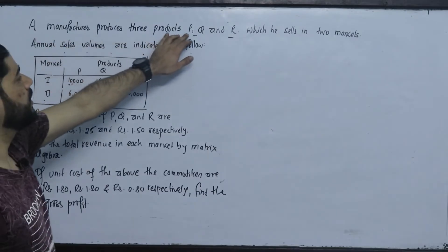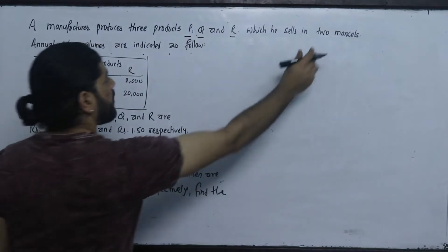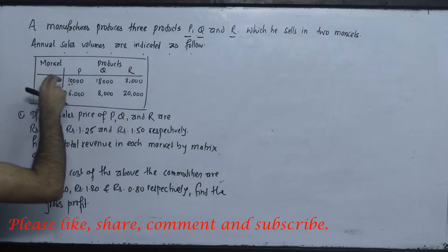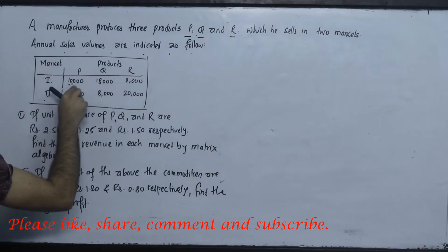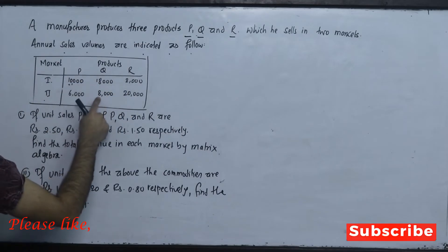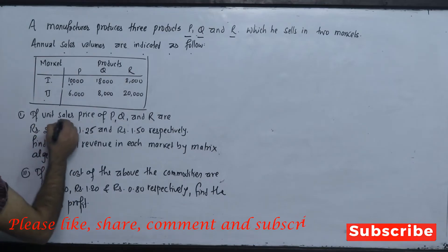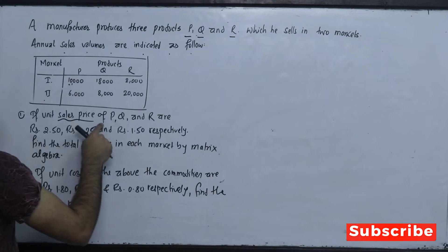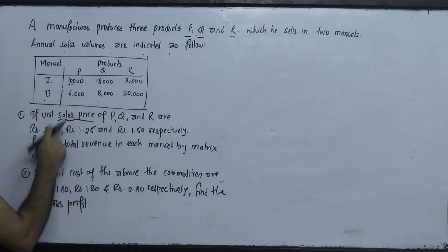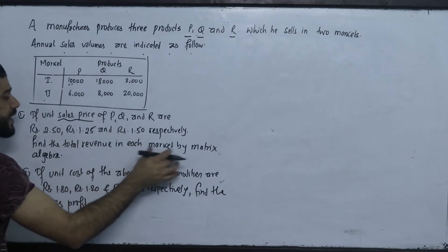We will solve this question. In this market, P is 10,000, Q is 18,000 and R is 20,000. In the second market, P is 6,000, Q is 8,000 and R is 20,000. If the sales price of P, Q and R are 2.50, 1.25 and 1.50 respectively, find the total revenue in each market by matrix algebra.